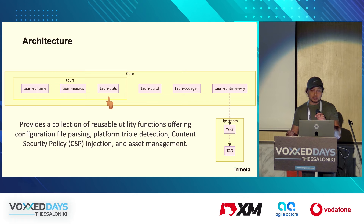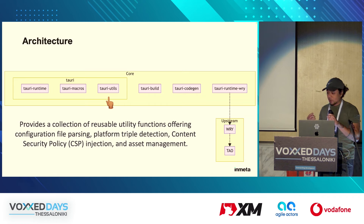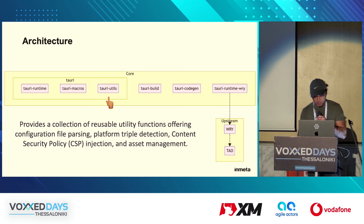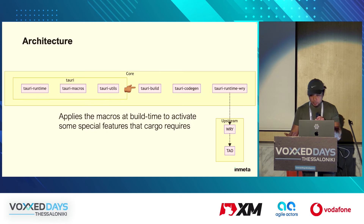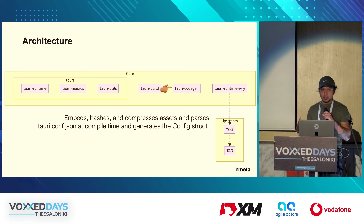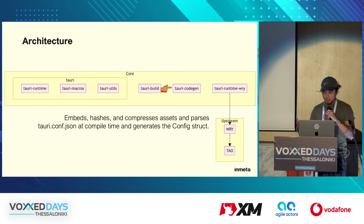Tauri utils — this crate provides a collection of reusable utility functions offering configuration file parsing, platform triple detection, content security policy injection, and asset management. Tauri build applies the macros at build time to activate special features that cargo requires. Then you have the Tauri codegen crate — it embeds, hashes, and compresses assets, and parses the Tauri JSON file at compile time and generates the config struct.